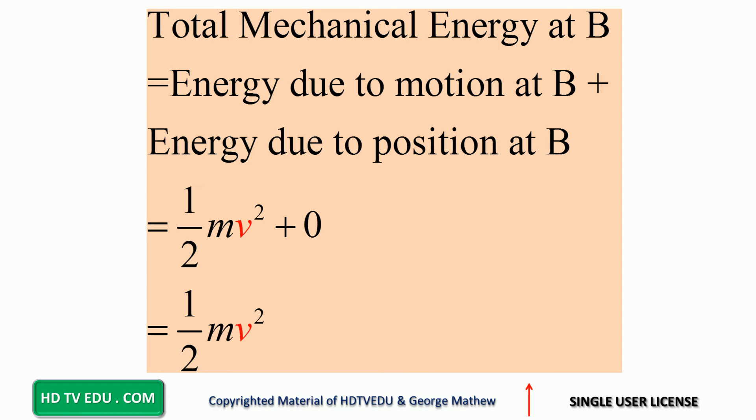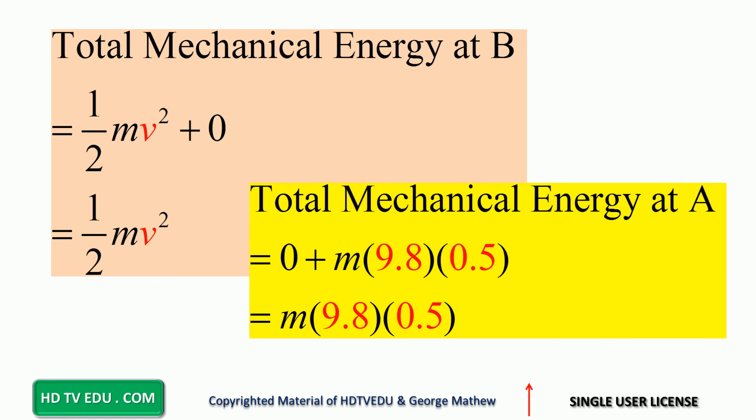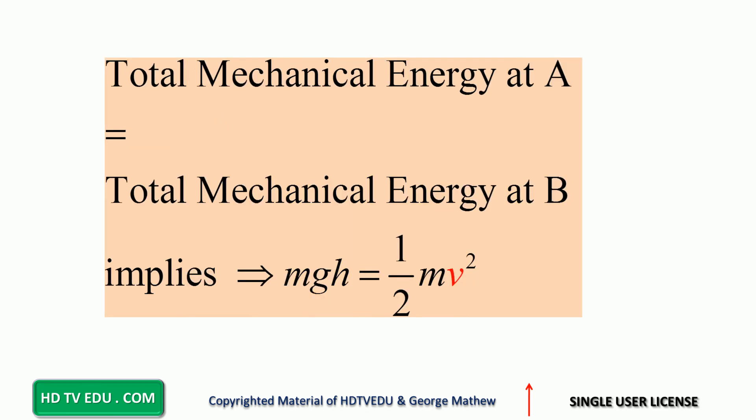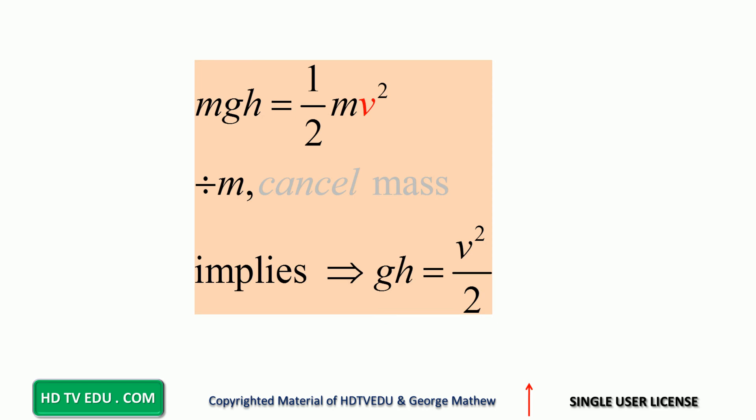So you get total energy at B is equal to one half mv squared, and so you set the total energy at B equal to total energy at A. MGH is equal to one half mv squared. Cancel mass, and what do we get? GH is equal to v squared over 2.